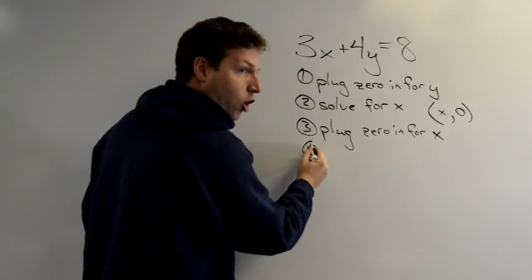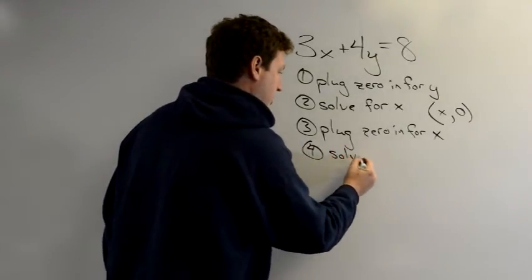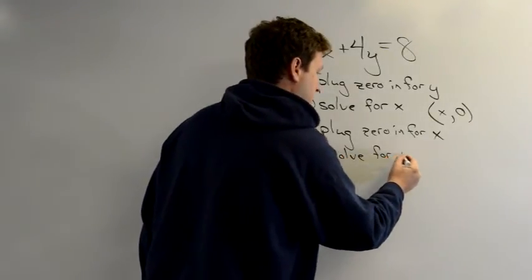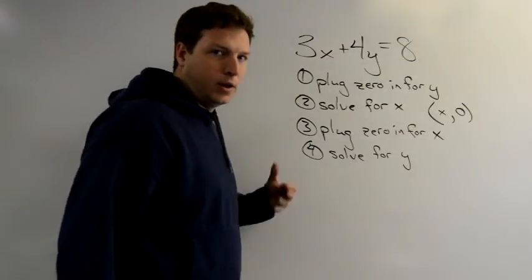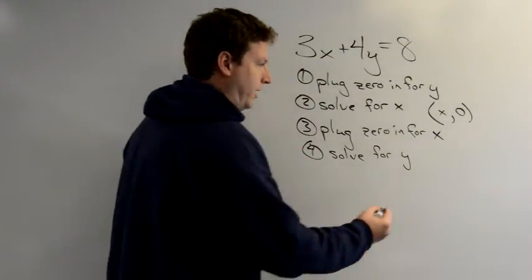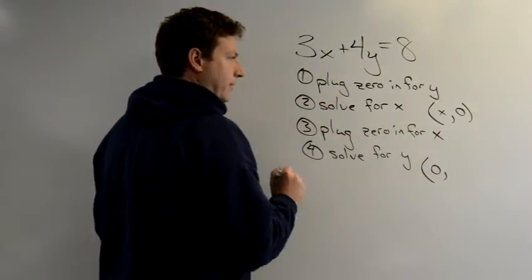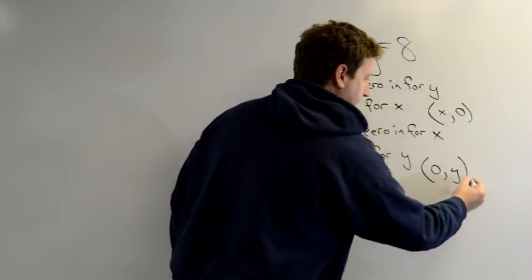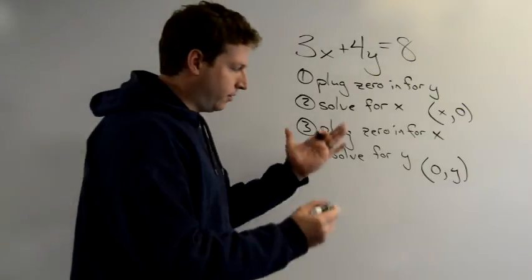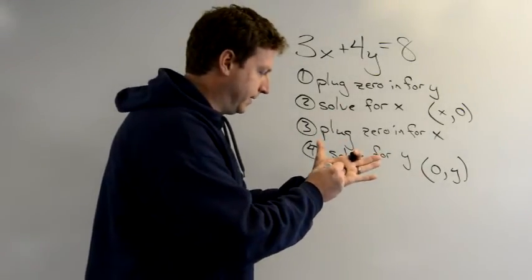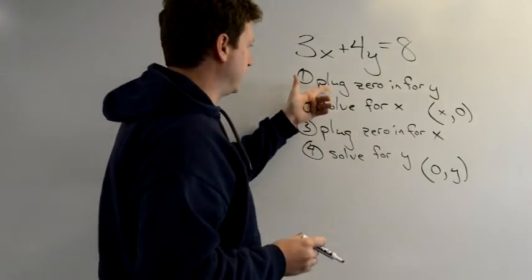Step 3 is going to be the exact opposite. We plug 0 in for x. Step 4, solve for y. And what is that? That's my y intercept. So I'm going to get the point of 0 for x, like step 3 says, and y here. So real easy. So watch here, I'll get my 0 here. So let's go to step 1.